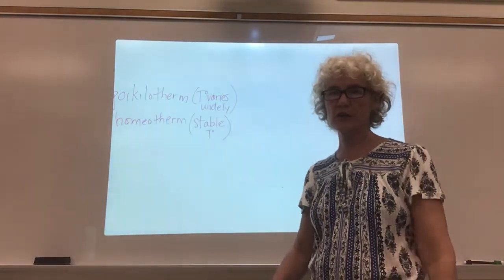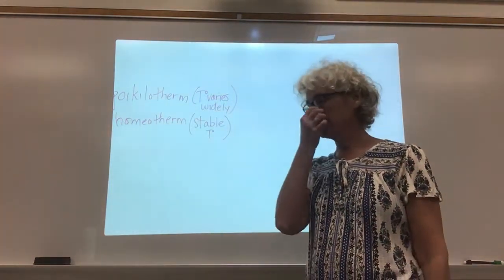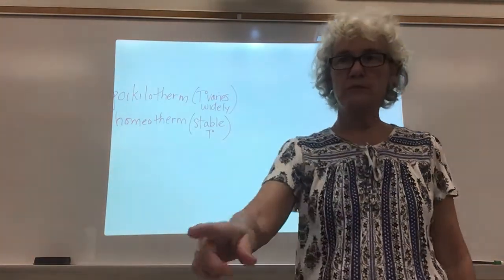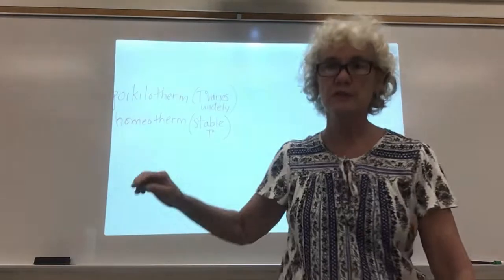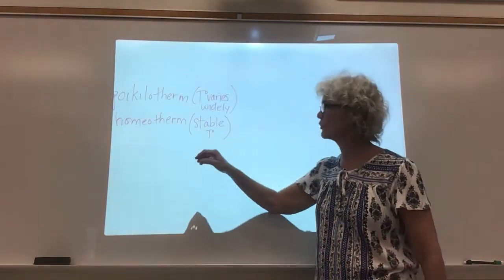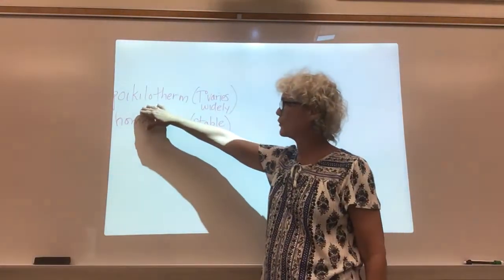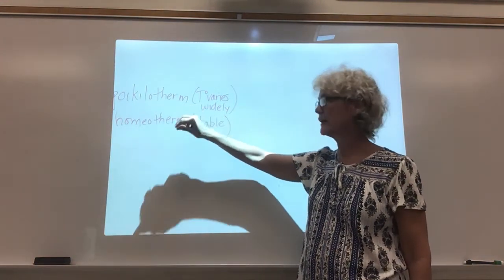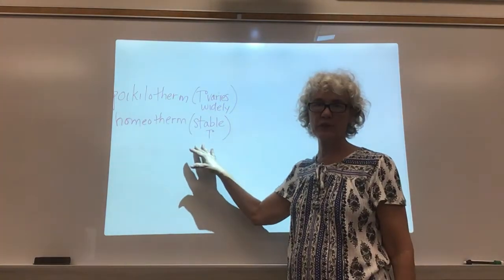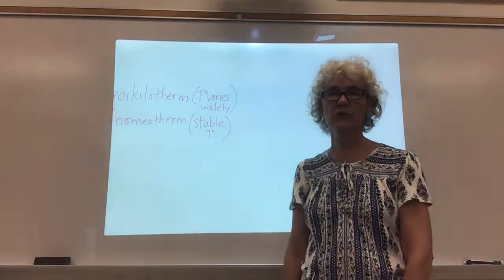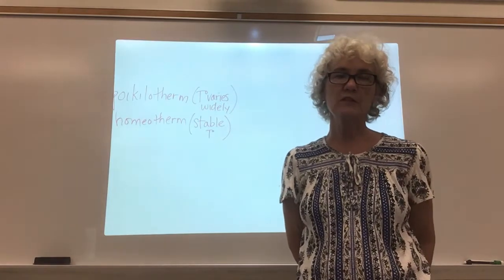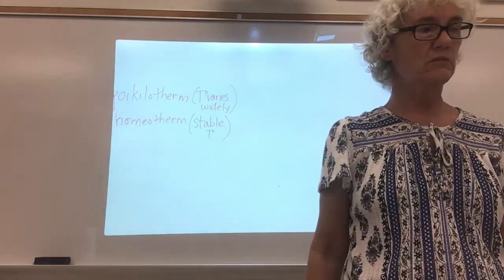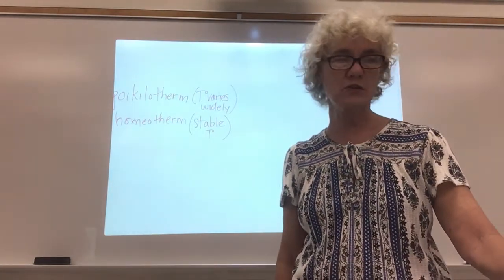There are a couple of other terms associated with temperature regulation. This is poikilotherms — what that means is the temperature of something varies widely. And a homeotherm is one that has a stable temperature. This is roughly like endotherm and ectotherm, but talking specifically about temperature.